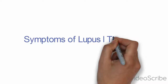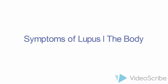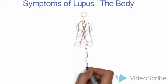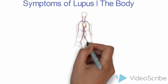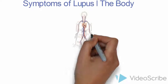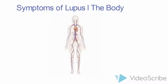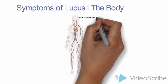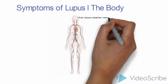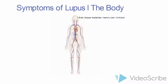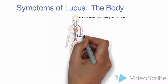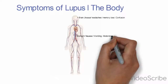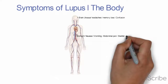Now, symptoms of lupus in the rest of the body. First, how lupus affects the brain: you'll usually have headaches, memory loss, and confusion. With the stomach, there's nausea, vomiting, abdominal pain, and bladder infection. And with the heart and the lungs, there's usually shortness of breath and some pain in the chest.